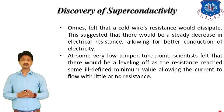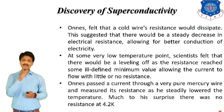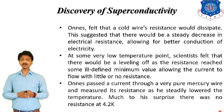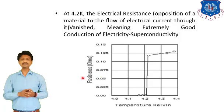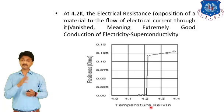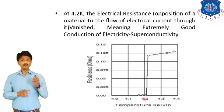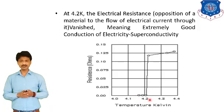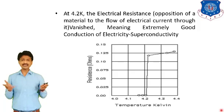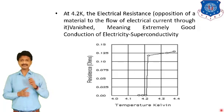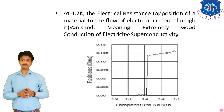Onnes passed current through a very pure mercury wire and measured its resistance as he steadily lowered the temperature. You can see in the graph — this is a graph of resistance versus temperature. Onnes was surprised to find there was no resistance at 4.2 K temperature. As discussed in the concept of superconductivity, at a certain temperature the resistance of a material becomes zero. So at 4.2 K, the electrical resistance of mercury to the flow of electric current is zero, meaning there is extremely good conductivity.